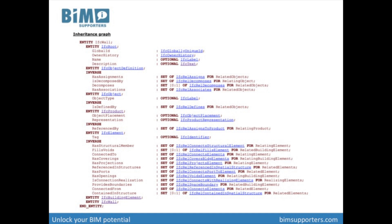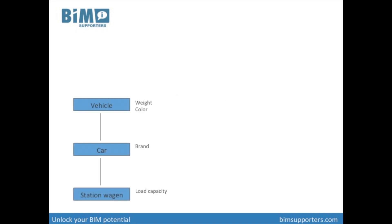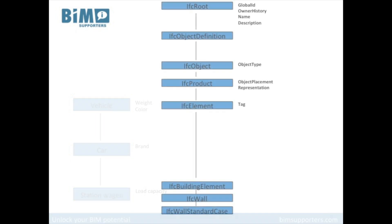Now we are getting into the nitty-gritty of the IFC schema. Let's start with the general concept of inheritance in data schemas. Most people know the concept of specialization. For example, a specialization of a vehicle can be a car, and a specialization of a car could be a station wagon. A vehicle could have a weight and a color, a car could have a brand, and a station wagon a load capacity. Inheritance means that all the specializations of an object inherit the properties of their parent objects. A station wagon also has a brand and a weight and color. All cars also have a weight and color, but no load capacity property. The same principle applies to the defined entities in the IFC schema.